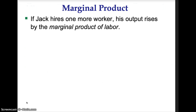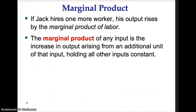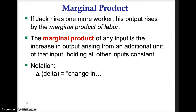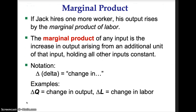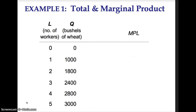Marginal Product: If Jack hires one more worker, his output rises by the marginal product of labor. The marginal product of any input is the increase in output arising from an additional unit of that input, holding all other inputs constant. The triangle symbol stands for delta and means change in. Delta Q means change in output, and delta L means change in labor. The marginal product of labor, or MPL formula, is delta Q divided by delta L. When the number of workers changes by one unit and the quantity of output changes by 1,000, the marginal product is 1,000 bushels.